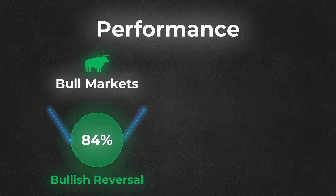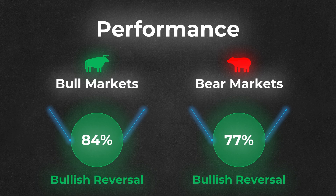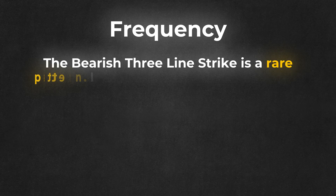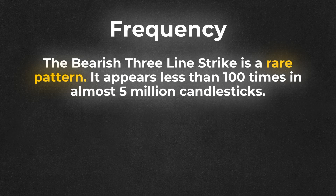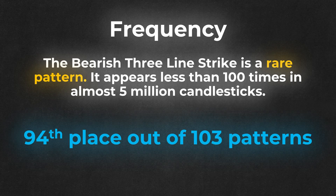Real market data shows that in bull markets, this pattern works as a bullish reversal 84% of the time, and in bear markets, it works as a bullish reversal 77% of the time. Even though the bearish three-line strike works well a lot of the time, it has one major disadvantage: it's a rare pattern. It appears less than 100 times in the massive data set of almost 5 million candles analyzed by Bukowski. Out of the 103 candle patterns, this one placed 94th in terms of frequency — one of the top performing patterns is also one of the rarest.